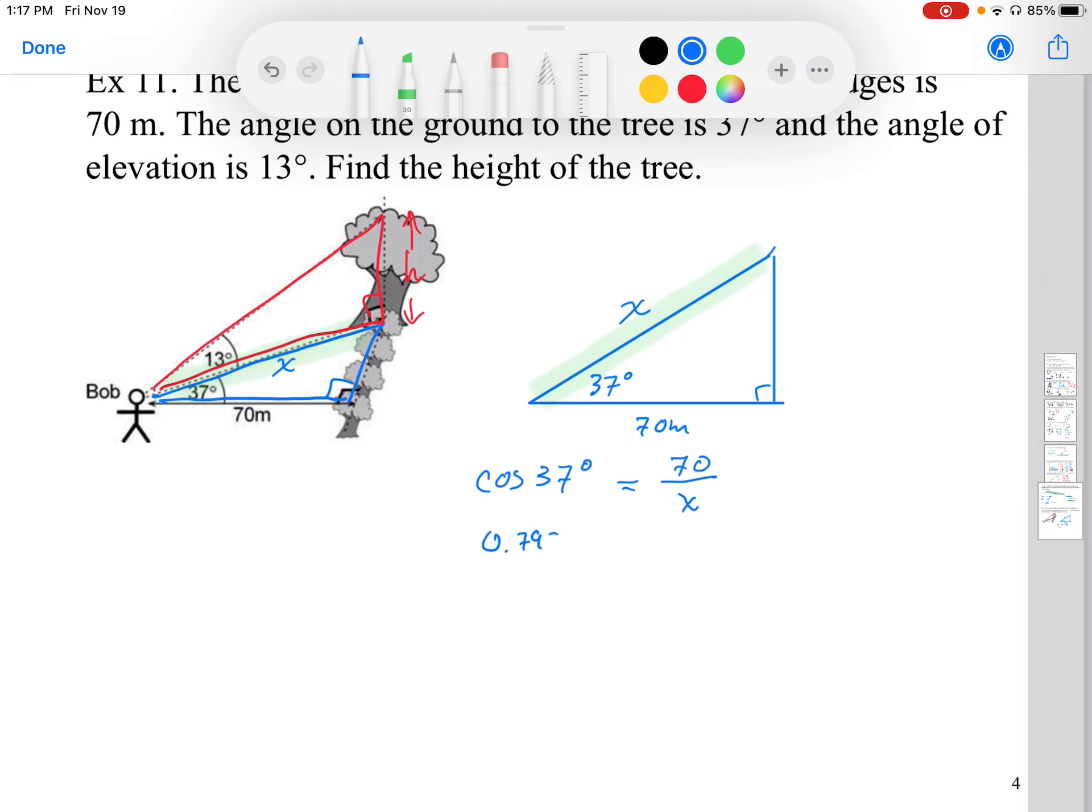So 0.799 to 1, and that's going to be 70 to x. I can cross-multiply this and solve for x. So I get 70 divided by 0.799. My calculator gives me 87.649, so 87.65 meters is that length.